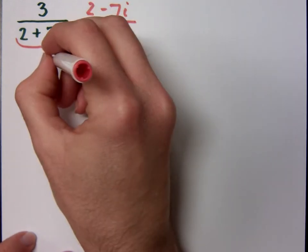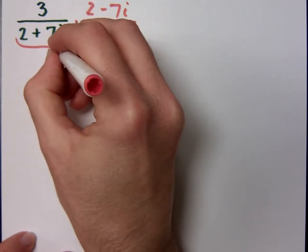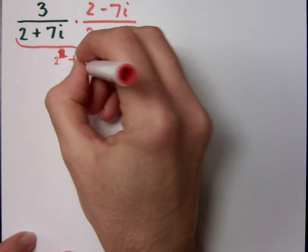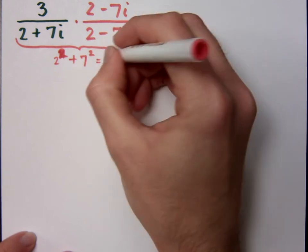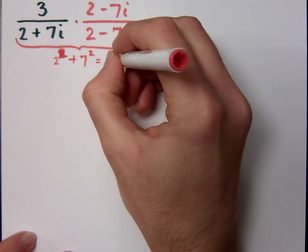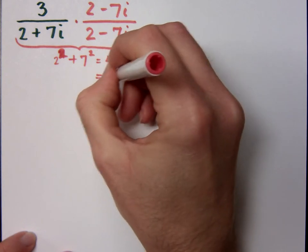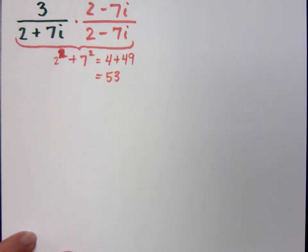So it means this guy is going to be 2 squared, I guess I was jumping to the answer, plus 7 squared. So we end up with what? 4 plus 49. And that just equals 53. So that means my denominator is 53. Are you with me? It's the sum of squares.